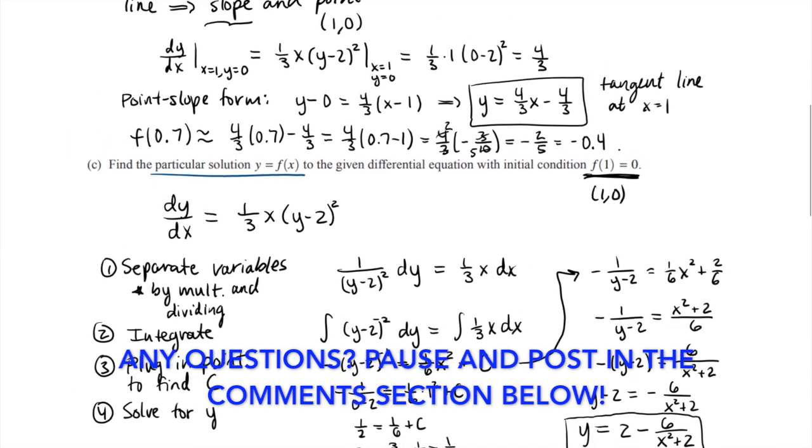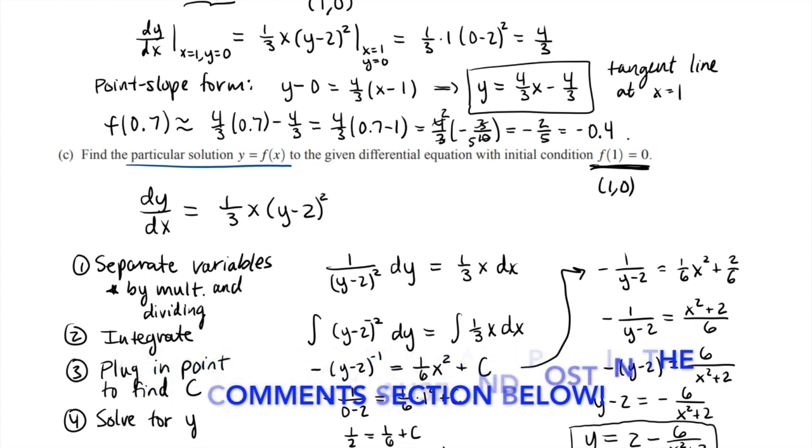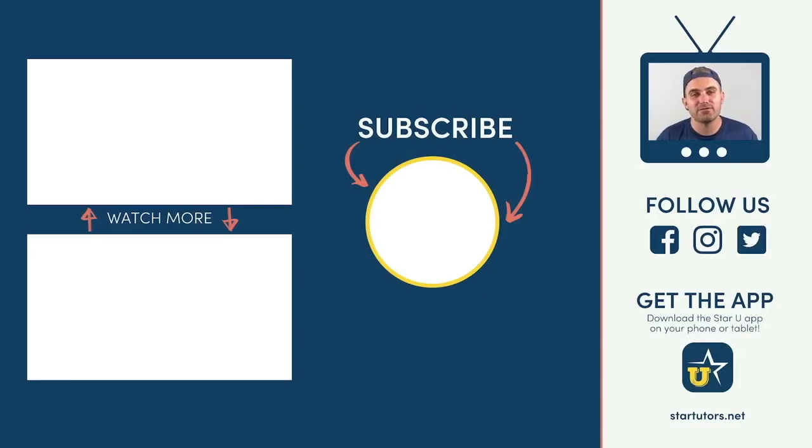And that is how to solve number 6 from the 2018 AP Calc AB exam. Have a good day and best of luck studying. Don't forget to subscribe and hit that bell for all future notifications.